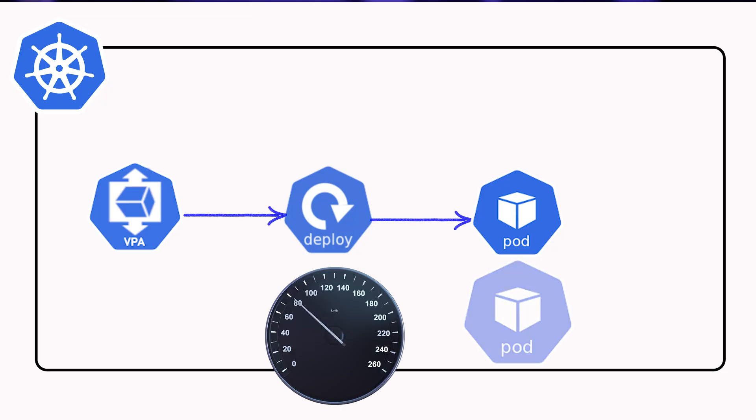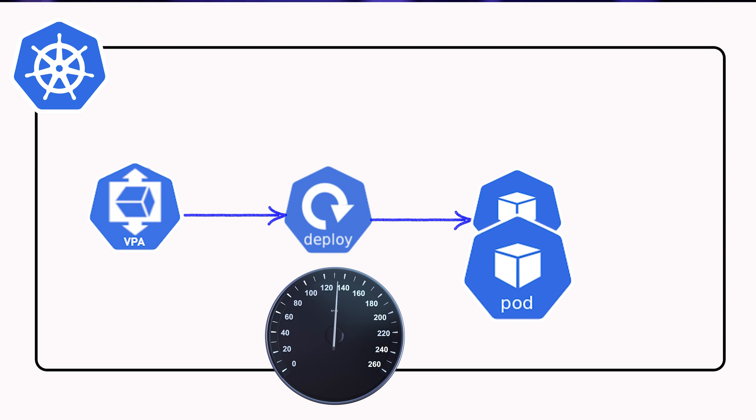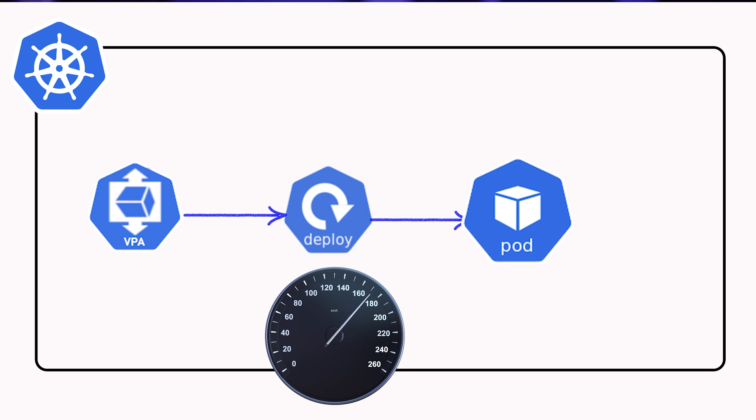Quick side note: since Kubernetes 1.33, VPA can now dynamically adjust resource requests without rescheduling the pod, whereas before VPA had to reschedule the pod to change the actual request in our deployment or stateful set.